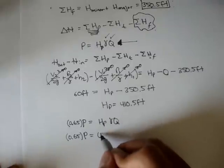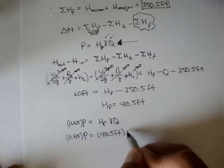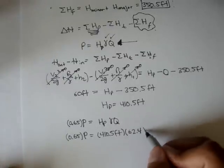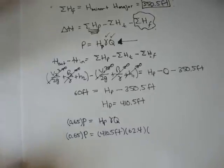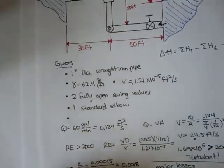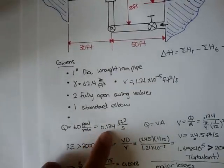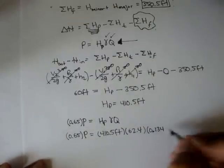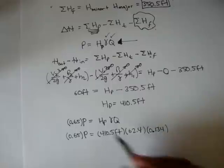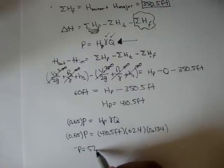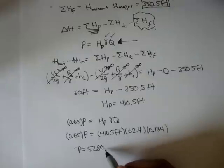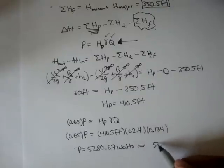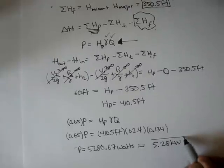And we can rewrite this a little bit more. Head pump is 410.5 feet, times the specific weight of the fluid, which is 62.4. And the volumetric flow rate, remember, in our first video, we found to be Q is 0.134 feet cubed per second. So 0.134. And if we solve the power, we get power is equal to 5,280.67 watts or 5.28 kilowatts.